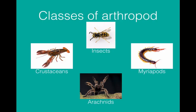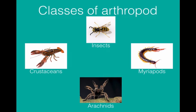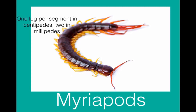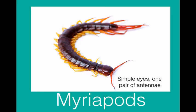The second class of arthropods are the myriapods, which include the millipedes and the centipedes. They consist of many segments — a head segment and a tail segment, with intermediate abdominal segments that are all virtually identical. Each segment has legs: one pair of legs per segment makes it a centipede, and two pairs makes it a millipede. They have simple eyes rather than compound eyes, and they have a single pair of antennae.